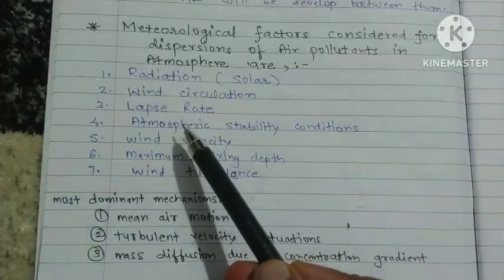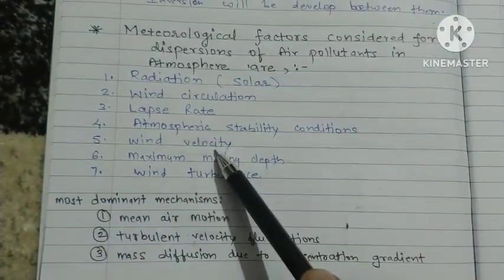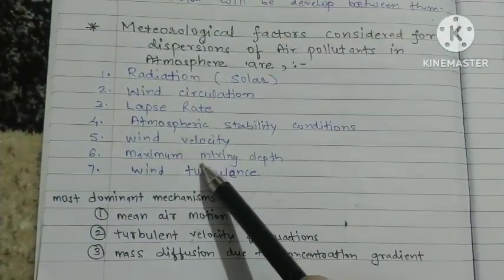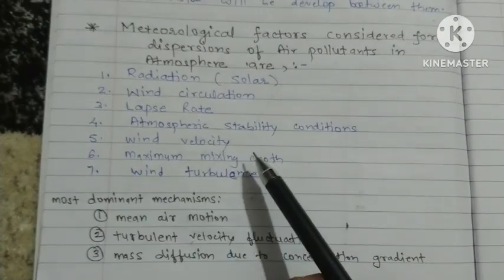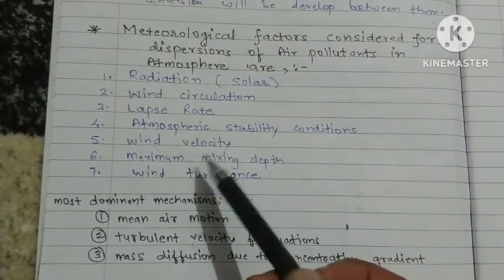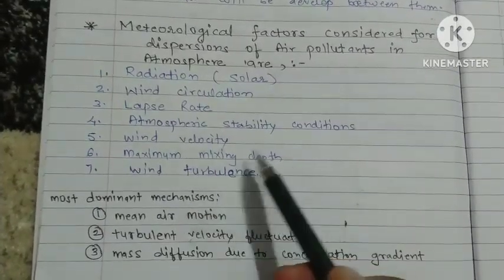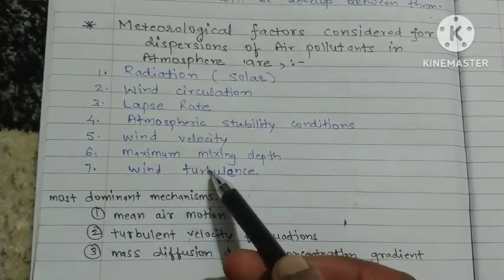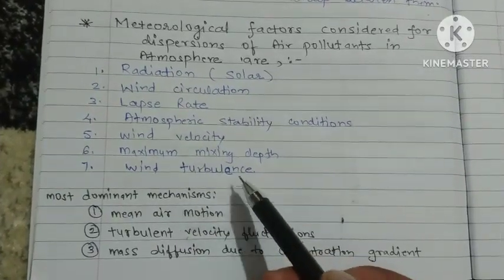Then comes the fifth factor, wind velocity, followed by the sixth, maximum mixing height — also referred to as maximum mixing depth — and the seventh and last factor is wind turbulence.